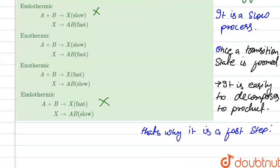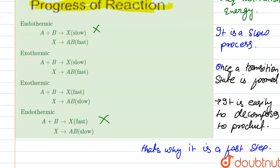So let's see which option is matched with this. Exothermic, A plus B to X is slow and X to AB is fast. This is our correct option, that is option B.